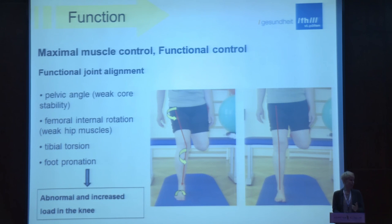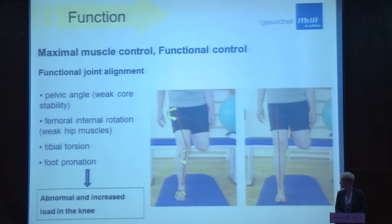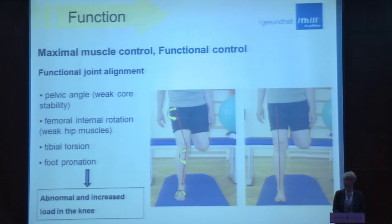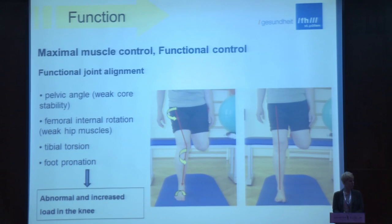Functional joint alignment is very important for these patients. As we can see in the picture, a patient with weak core stability, weak hip muscles, and tibial torsion with foot pronation shows abnormal loading in the joint, which might increase load on the cartilage repair tissue.